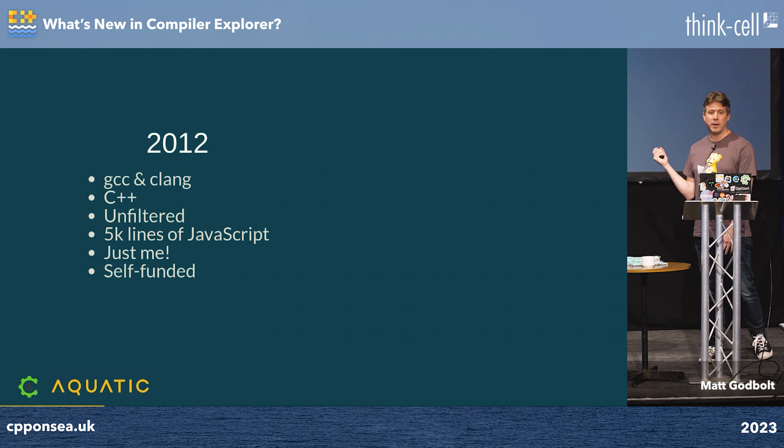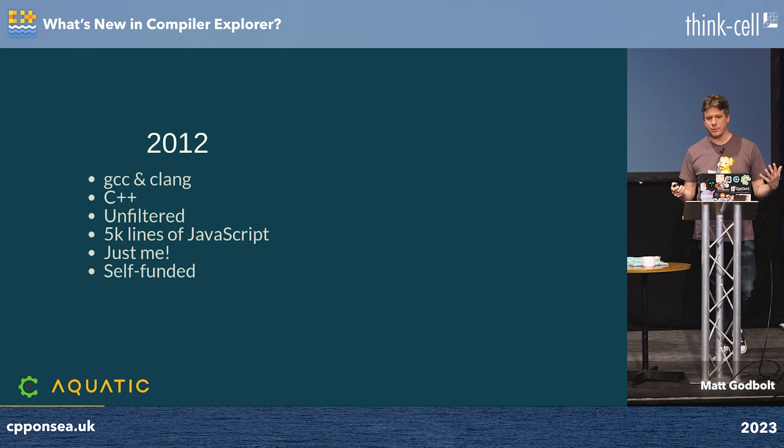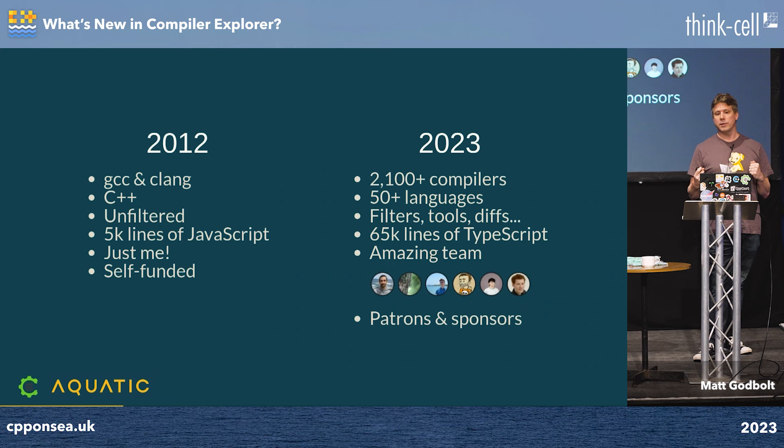In 2012 we had gcc and Clang. We only supported C++. The results were largely unfiltered. It was 5,000 lines of JavaScript and it was just me doing it, paying for it myself out of my own AWS account.